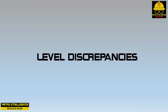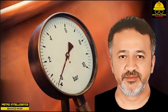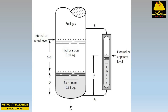Let's assume the gauge glass holds six feet of amine. Since the bottom tap is in the amine phase and the top tap is in the gas phase, liquid hydrocarbon is excluded from the gauge glass. To balance the weight of six feet of amine, the tower would need about two feet of amine and six feet eight inches of liquid hydrocarbon — meaning the tower liquid level would be about eight feet eight inches, or two feet eight inches higher than the gauge glass level.